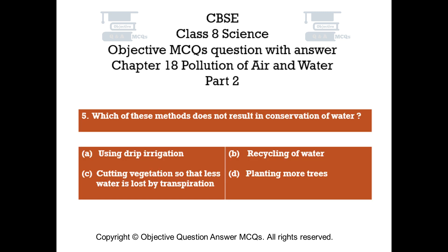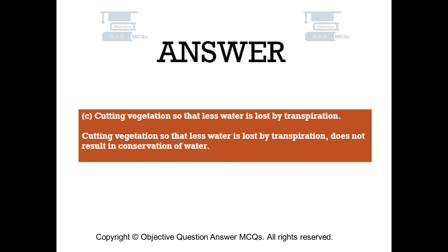Question number 5. Which of these methods does not result in conservation of water? Option A: Using drip irrigation. Option B: Recycling of water. Option C: Cutting vegetation so that less water is lost by transpiration. Option D: Planting more trees. The right answer is Option C. Cutting vegetation so that less water is lost by transpiration does not result in conservation of water.